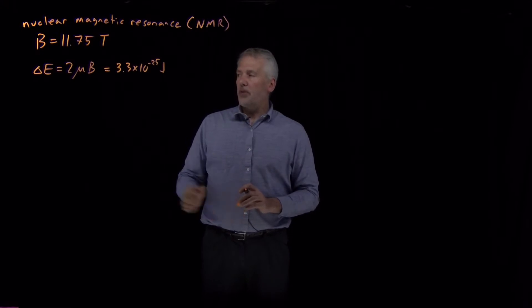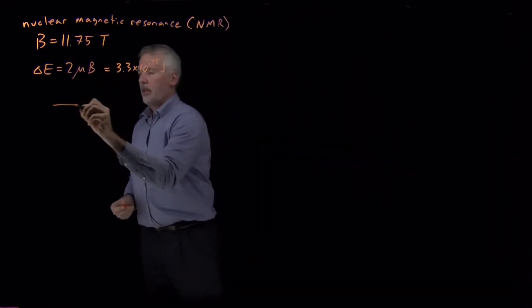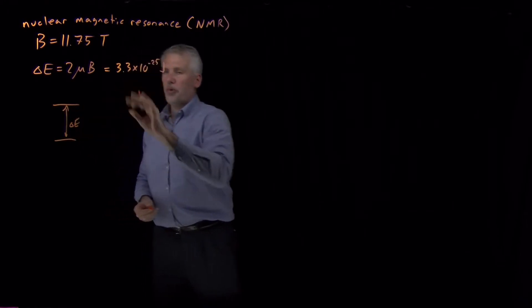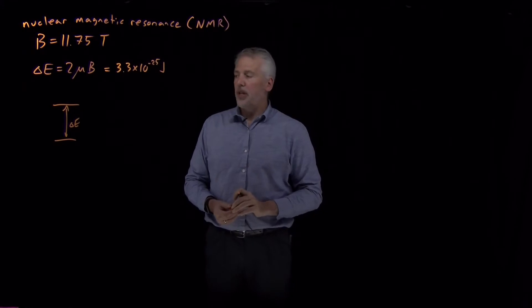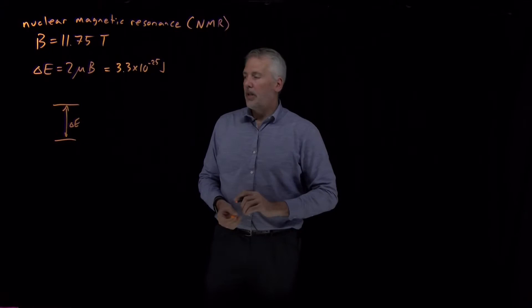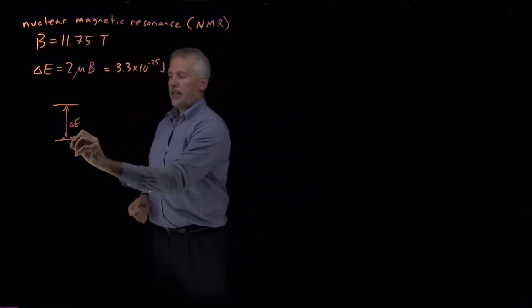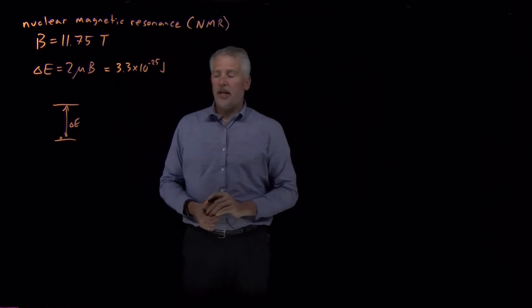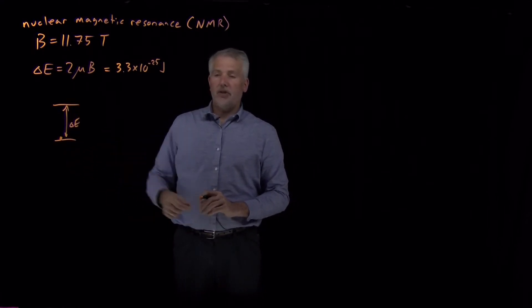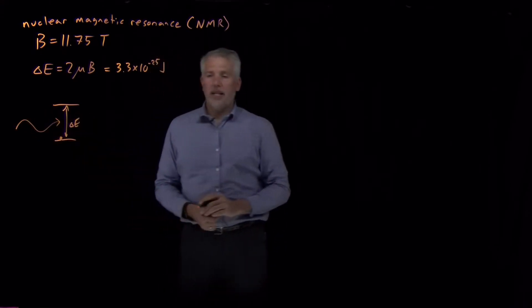What that means is we can begin to use this energy difference of 3.3 times 10 to the minus 25th joules to detect how many protons are in the upper state or the lower state. The way we can detect a nucleus in the ground state is by exciting it into the upper state.